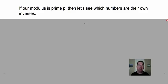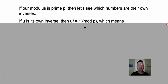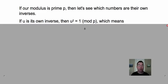We're going to make our modulus prime, because that's what Wilson's Theorem calls for. So if our modulus is prime, we're going to look at which numbers are their own inverses. So we're just going to make up a number u, and we're going to figure out what u could equal.